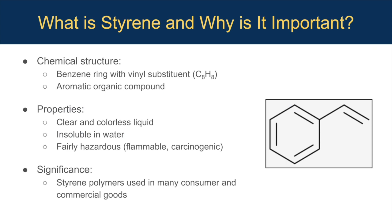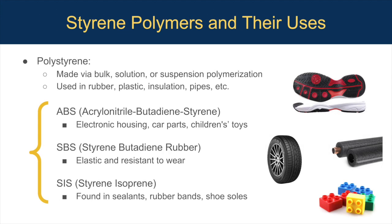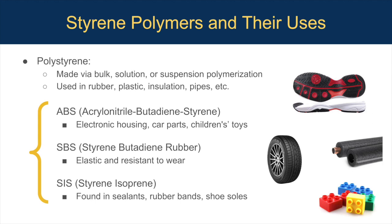Styrene is an aromatic organic compound that derives from benzene. This colorless liquid is fairly hazardous and will be taken into account in some equipment design. Styrene polymers are used in many consumer goods as opposed to the styrene monomer. Polystyrene can be made by three different polymerization methods: bulk, solution, and suspension. This is used in things like insulation and pipes.